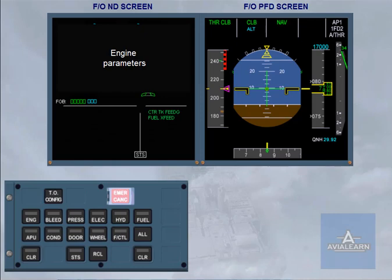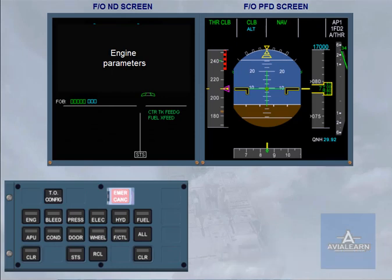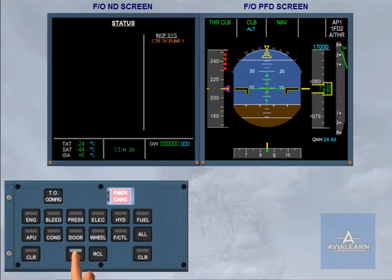The ECAM procedure is now complete. There are no lights on the ECP. During the approach phase, there is no automatic call of the status page when the flaps lever is moved. To remind the pilots to review status, the boxed status symbol on the engine warning display pulses. The status page should be selected as before.